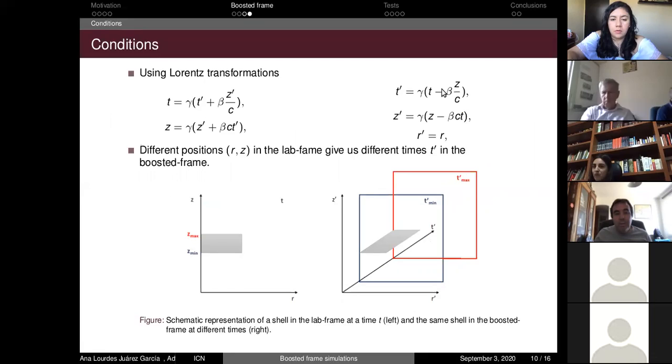To change between the different systems of reference, we use the Lorentz transformations. But we have a problem: as we can see in this diagram, different positions at the lab frame tend us to different times and positions in the boosted frame. So we have to define a specific time to start the simulation in the boosted frame. This time is given by the lab frame condition, so with this time setting we only use the Lorentz transformations to change between systems of reference.